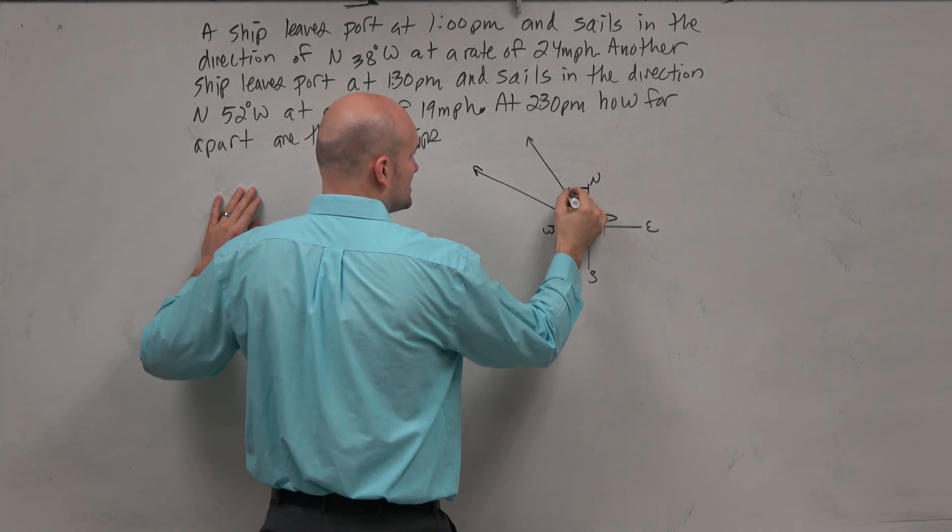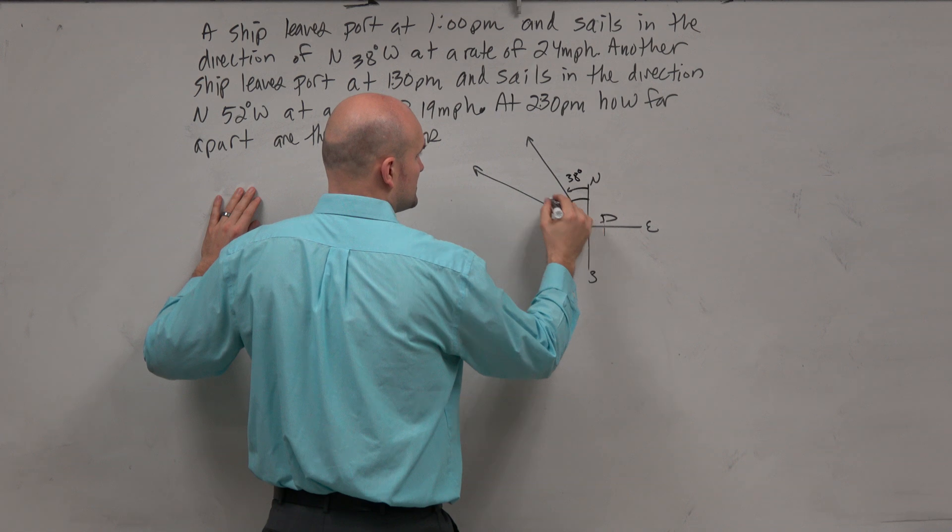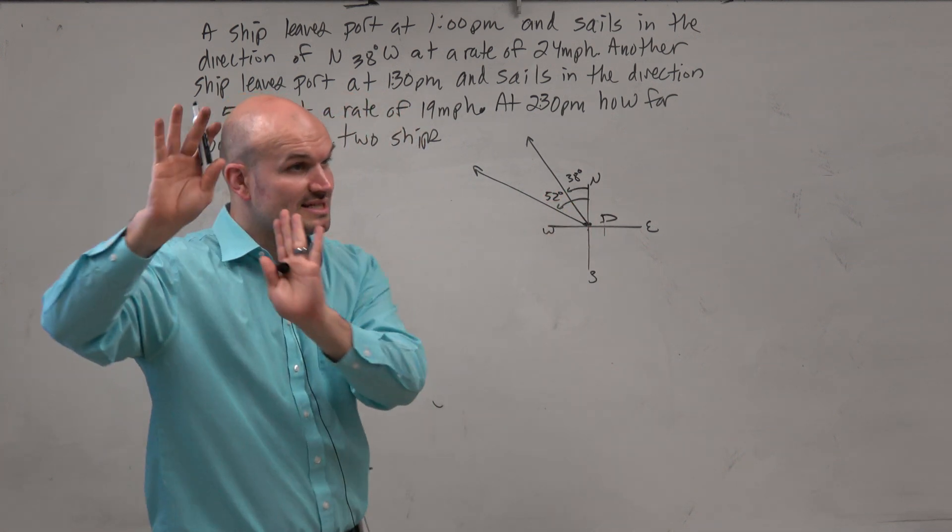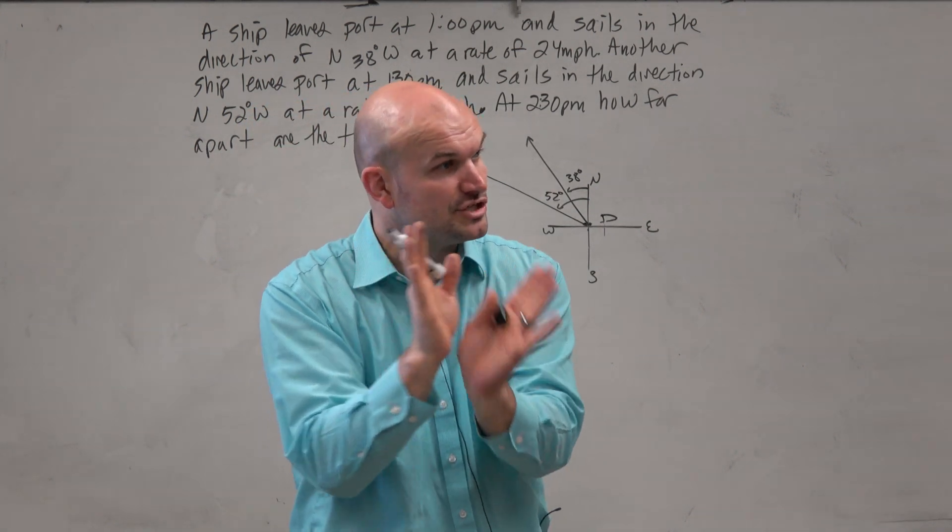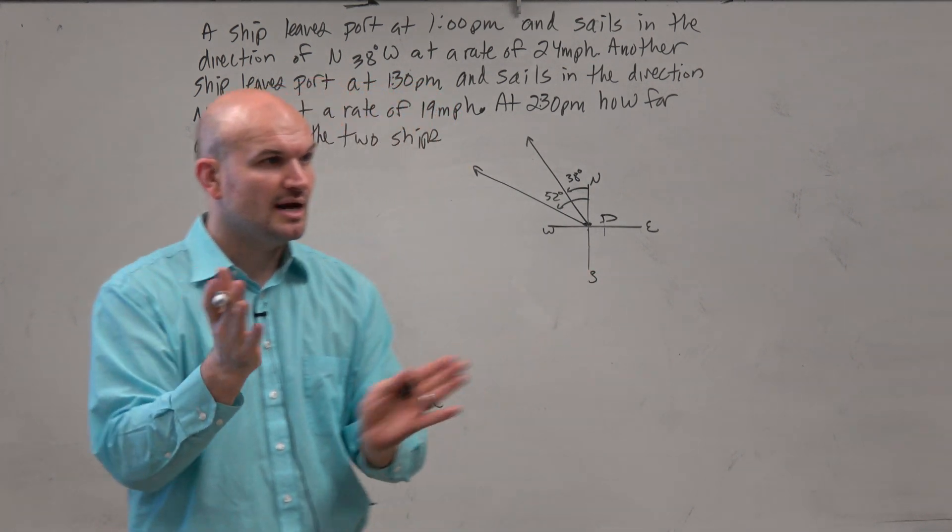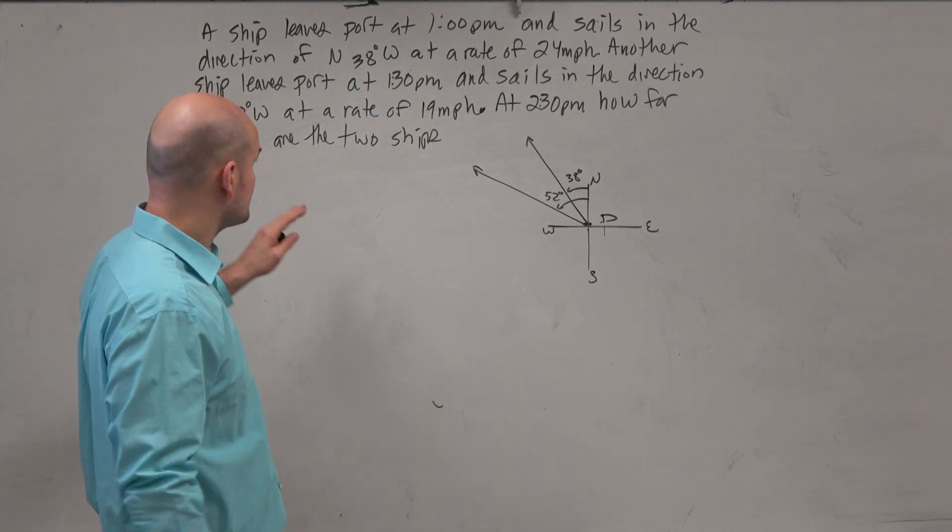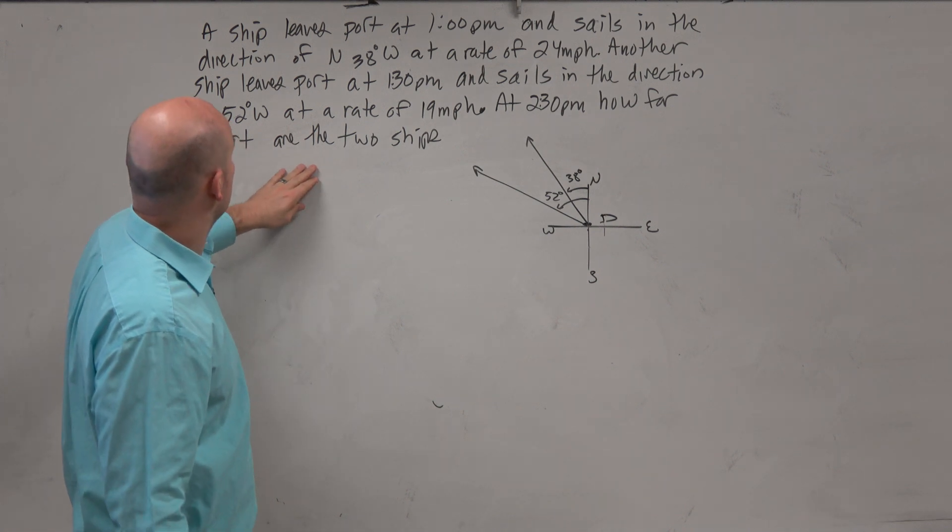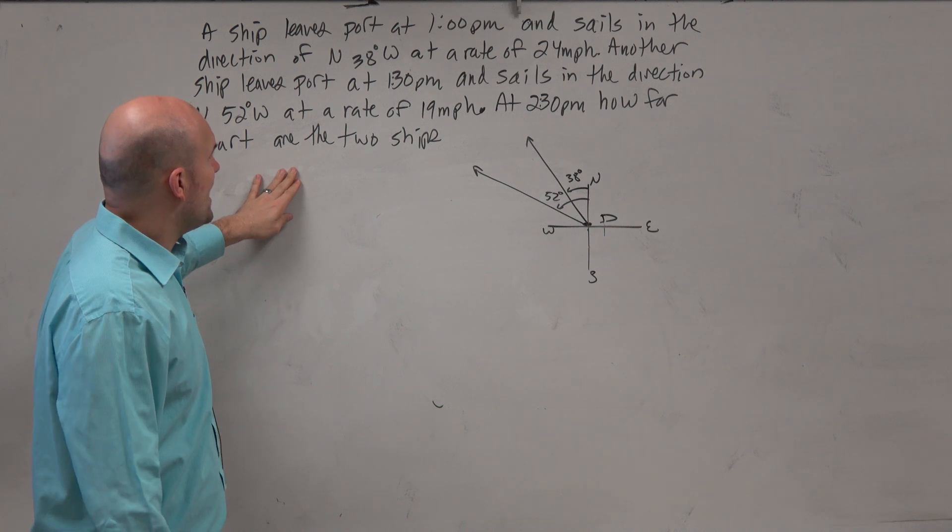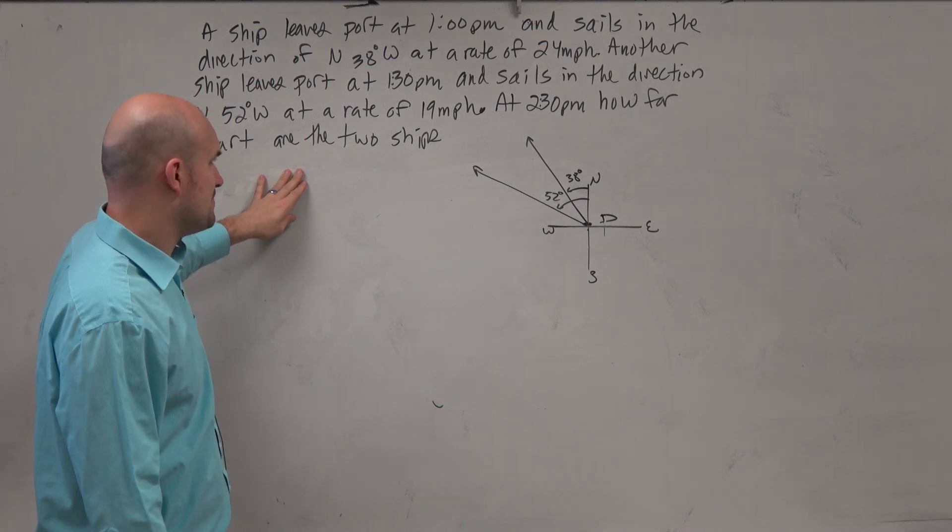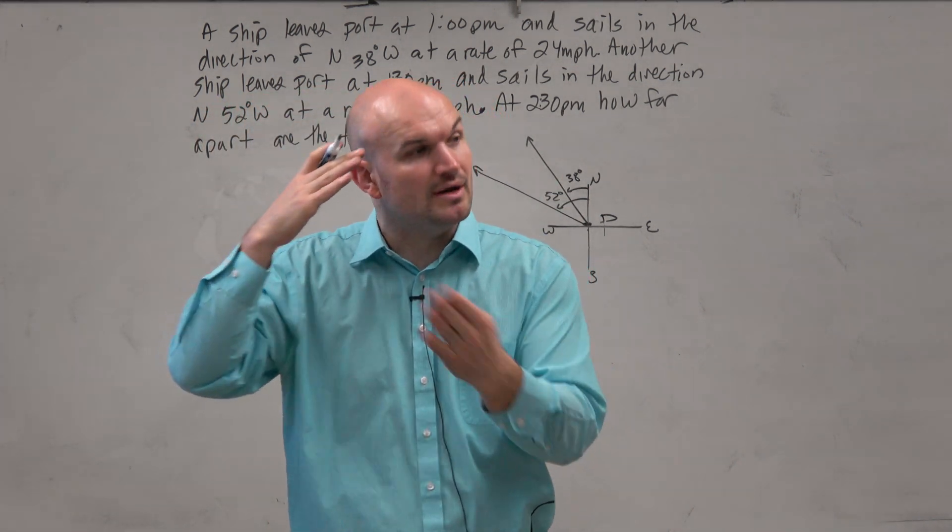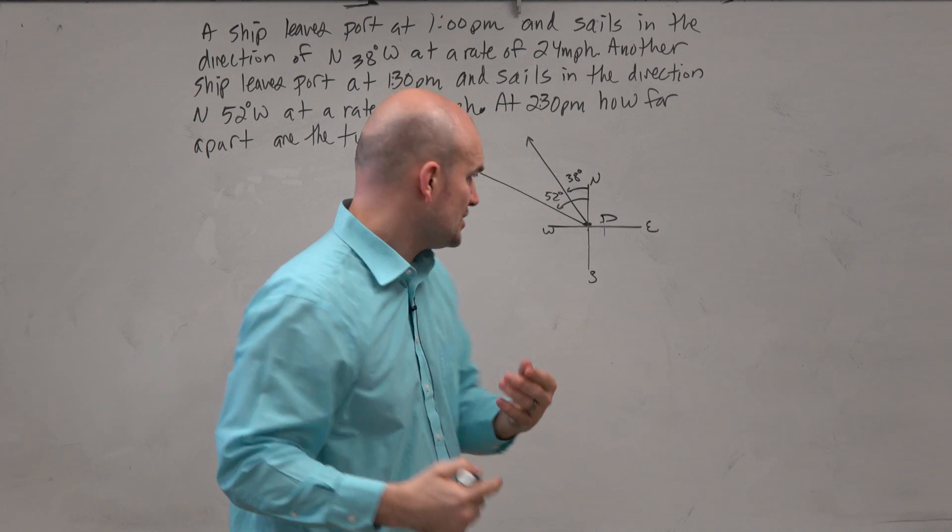So here's 38, and this one's going to be 52. Again, I'm just drawing these lines. I don't know actually how long they should be. I'm just kind of giving a rough sketch. Does that kind of make sense, though? At least the directions are there. I can always adjust my picture to make more sense. And then it travels at a rate of 19 miles per hour. So at 2:30 PM, how far are the ships apart? Well, if I'm given a rate, I need to find the distance. So I need to understand how is rate and distance related to each other. Well, remember, distance equals rate times time.